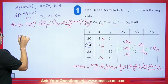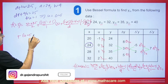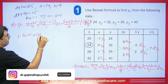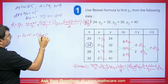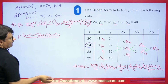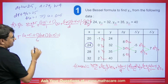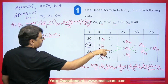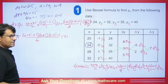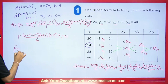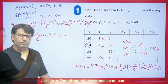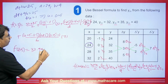Then (U minus 1/2) times U times (U minus 1) upon 3 factorial: 0.25 minus 0.5 times 0.25 times (0.25 minus 1) upon 6, times del cubed Y minus 1 which equals 7. When you solve this with the calculator, the answer will be 32.945, and this will be the answer.